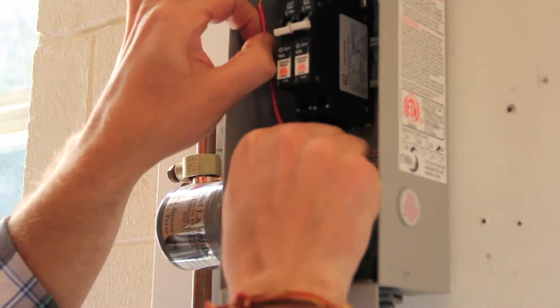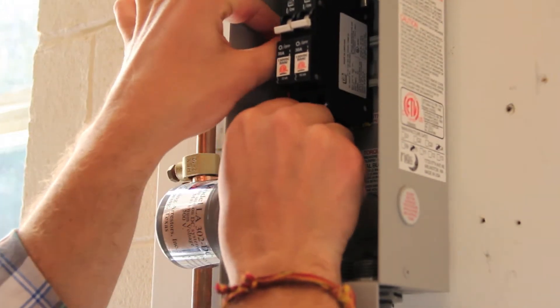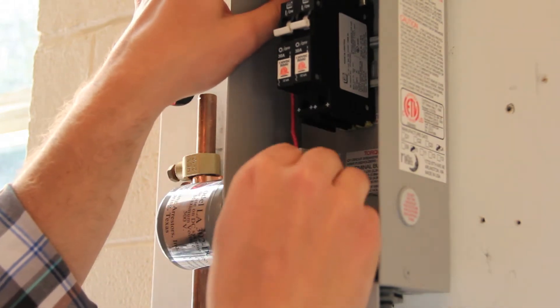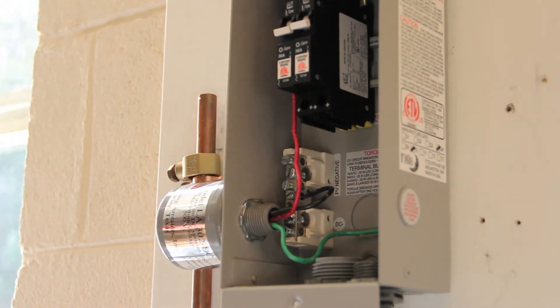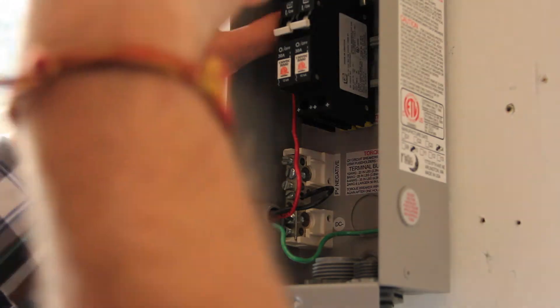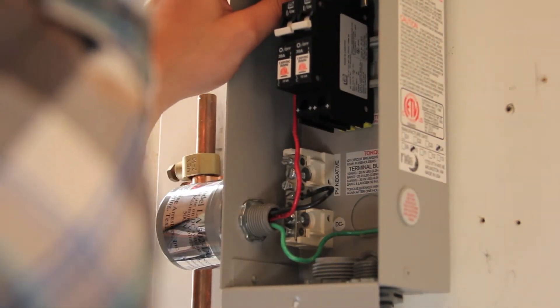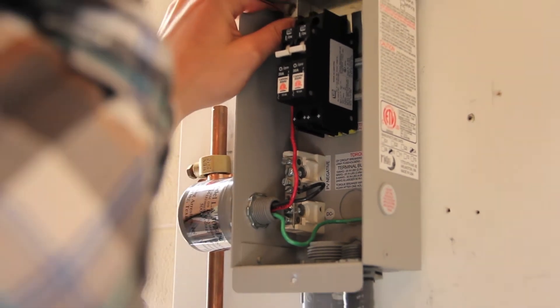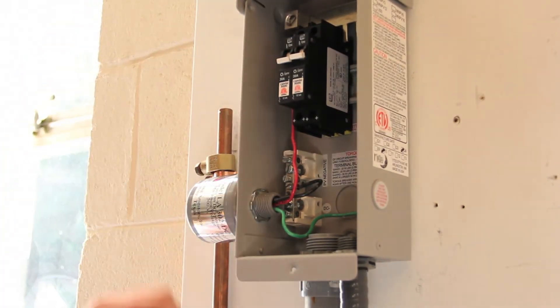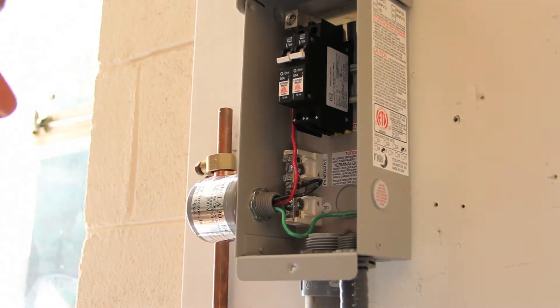And land our lightning arrester positive on the positive of the DIN rail. This will be wired in parallel with the photovoltaic array to capture any excess current from a lightning strike.